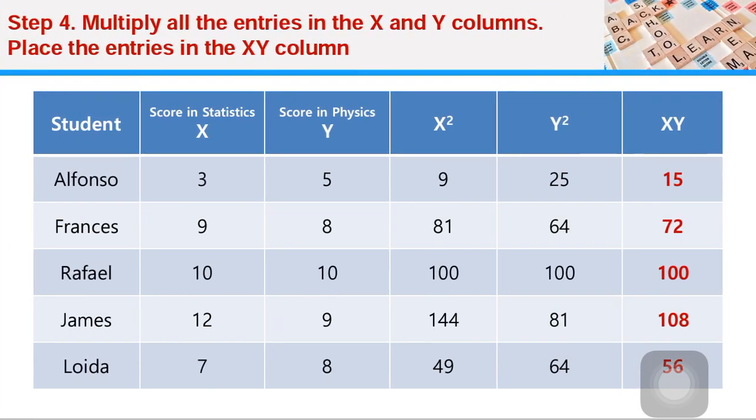Let's go to step four. You multiply all the entries in the X and Y column and place the entries in the XY column, in our last column. For example, three times five is 15.